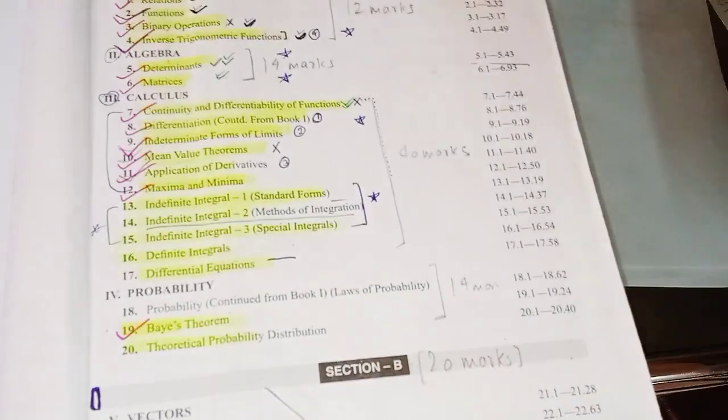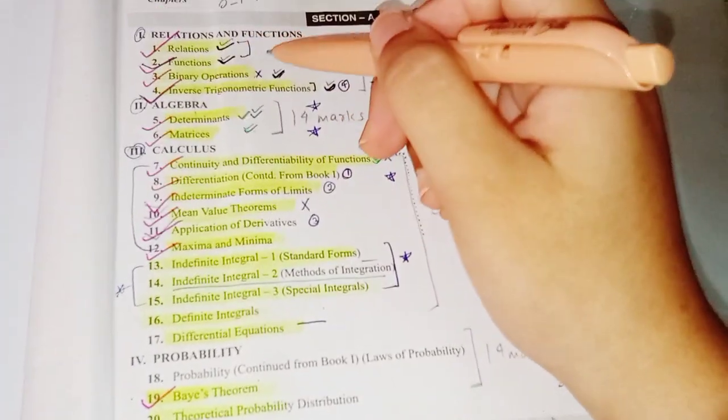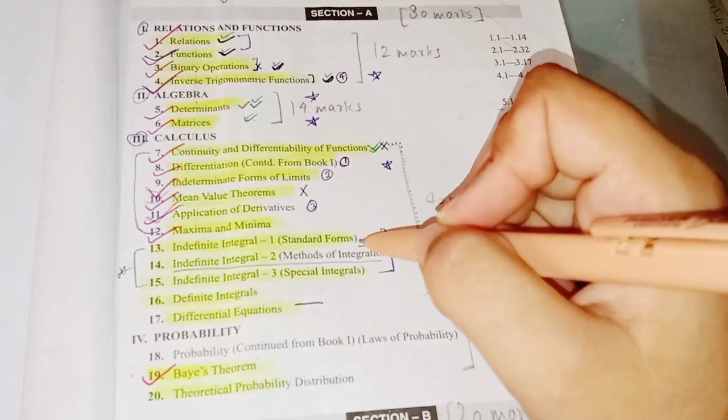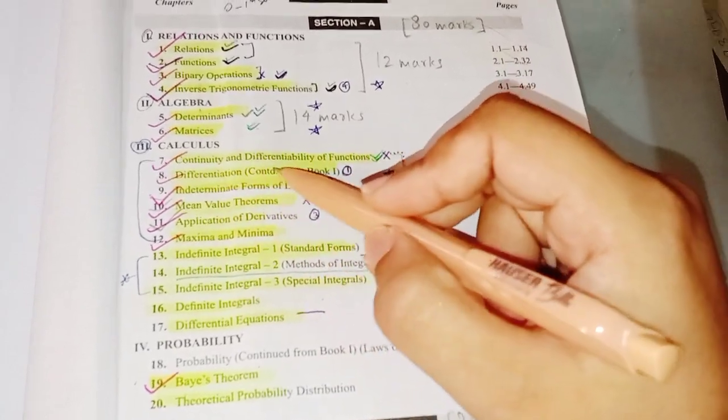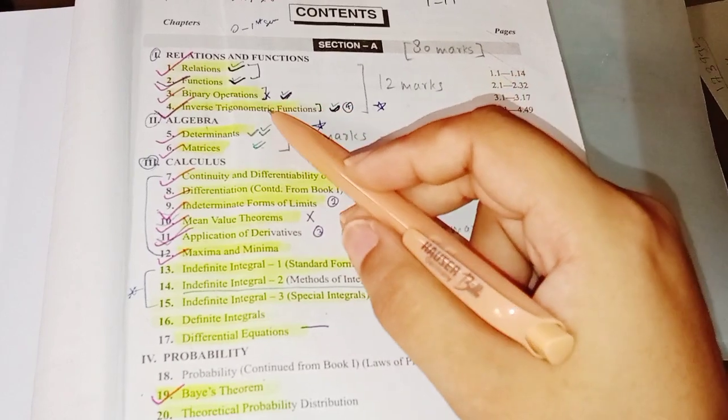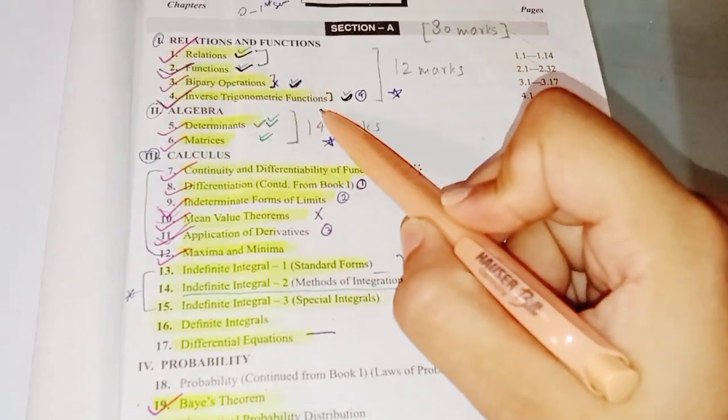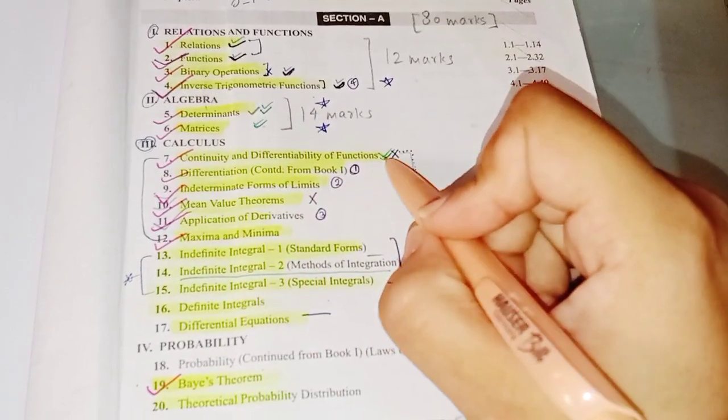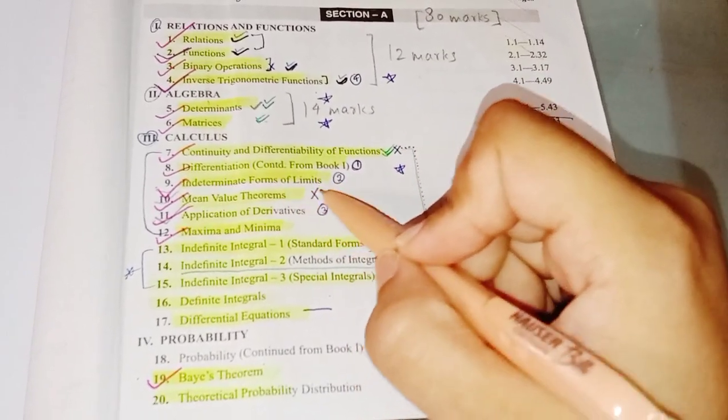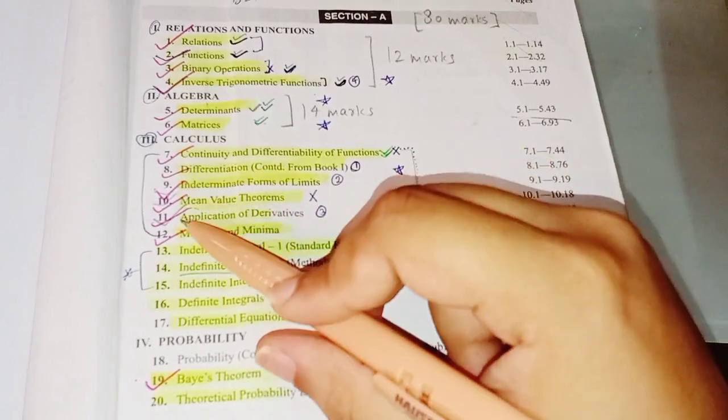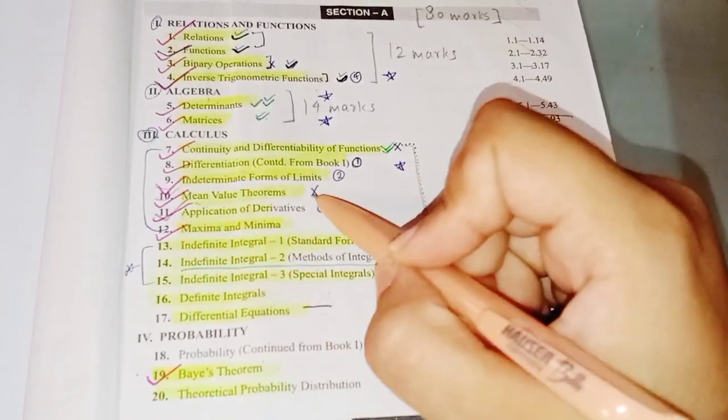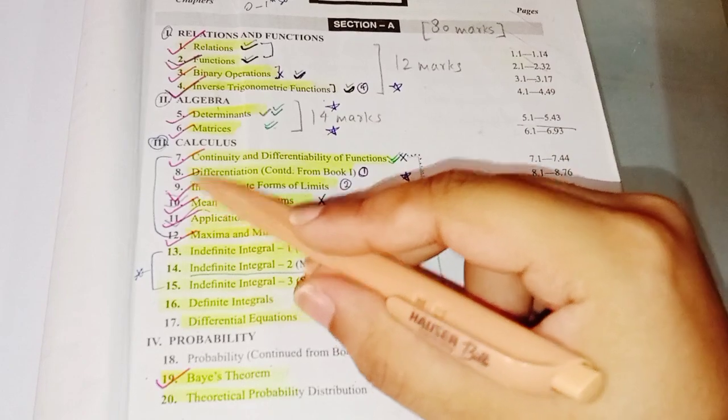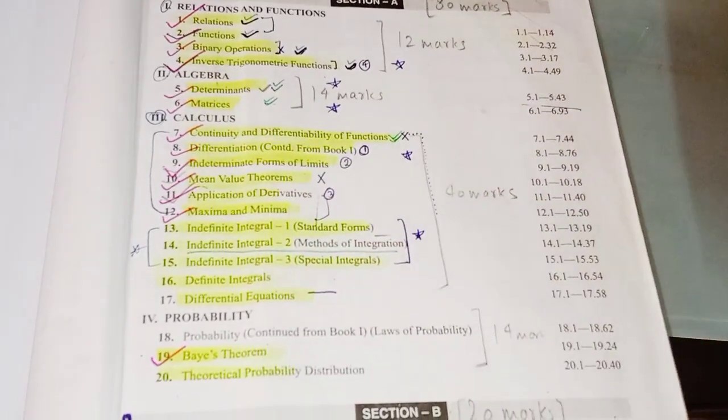If you'll ask me from which chapter you should start, you can start with relations and functions and then move on to binary operations. After that you can shift to this calculus part and start with differentiation. When you end differentiation, you can go back to chapter number four, that is inverse trigonometric functions. Afterwards you can do determinants, matrices, and continuity and differentiability of functions, indeterminate forms of limits. All these chapters are very easy - mean value theorems, application of derivatives, maxima and minima. All these chapters are based on differentiation. You need to practice a lot in this chapter number eight so that you can solve all these questions.